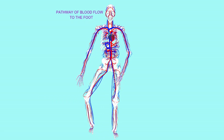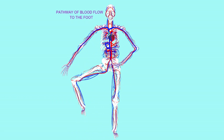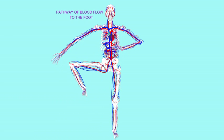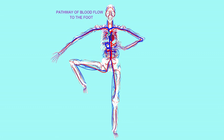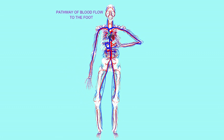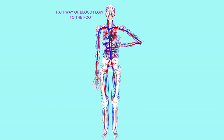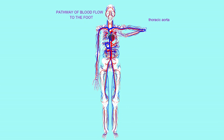If I wanted to send blood to my leg, what I would do is have it pass through the arch of the aorta to the descending aorta. The descending aorta can be split into the thoracic aorta as it passes through the thorax, and the abdominal aorta as it passes through the abdomen.